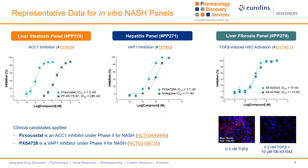This slide shows representative data for the three in vitro NASH panels. On the left-hand side is the ACC1 inhibition assay, which is included in the liver steatosis panel. ACC1 is an enzyme catalyzing the first step of lipogenesis, and inhibiting lipogenesis is one of the therapeutic strategies for treating NASH. We have applied firsocostat for assay validation, which is an ACC1 inhibitor under phase 2 for NASH indication. The middle is the VAP1 inhibition assay, which is included in the hepatitis panel. VAP1 is highly involved in inflammation and fibrosis progression in hepatocytes. Hence, VAP1 inhibition is one of the therapeutic strategies against NASH. We have also applied PLXS-4728 for assay validation, which is also under phase 2 trial for NASH indication.